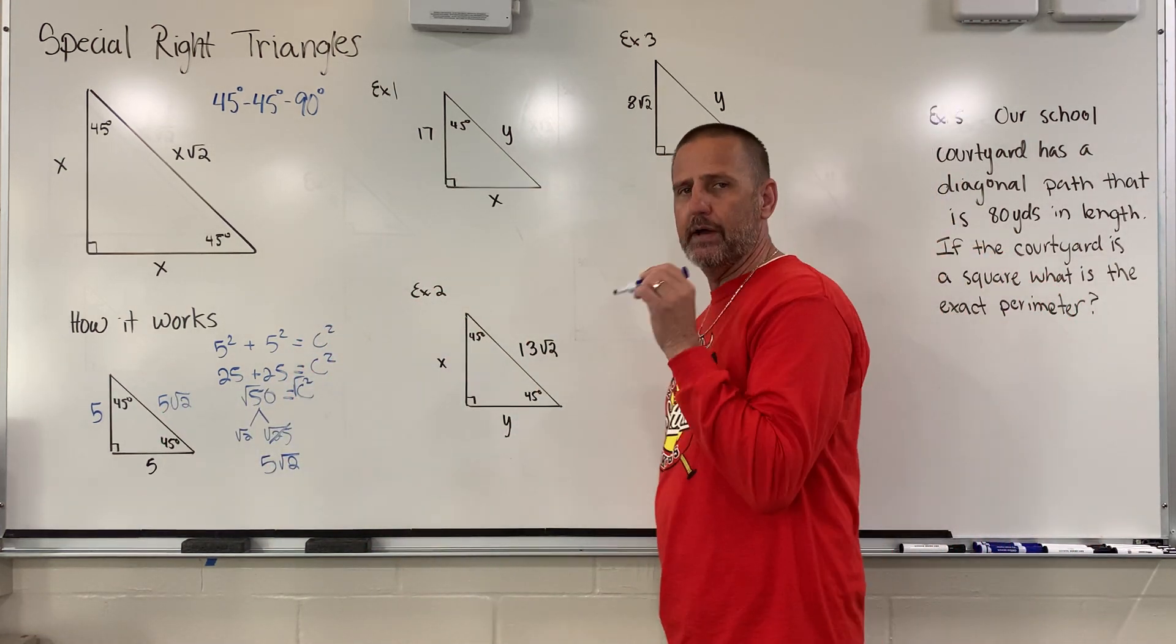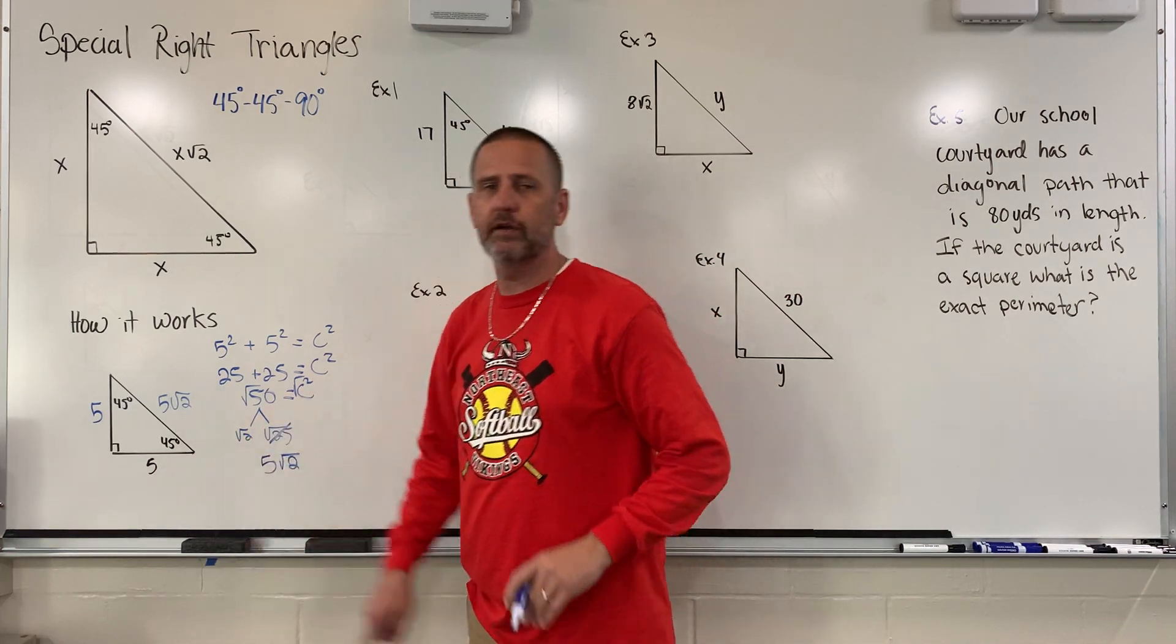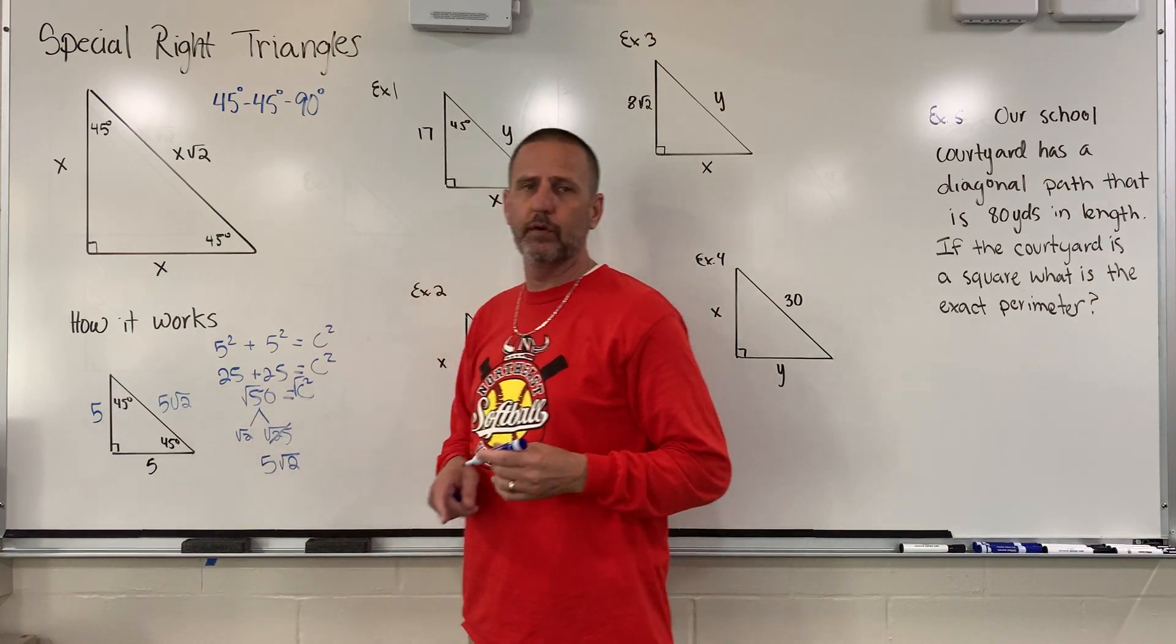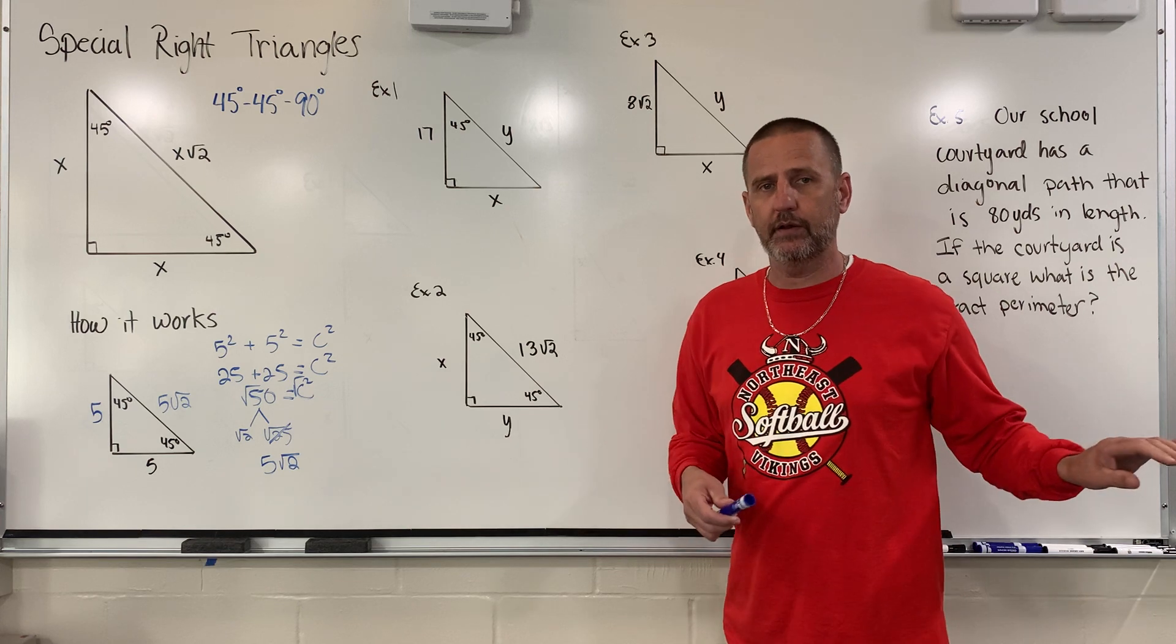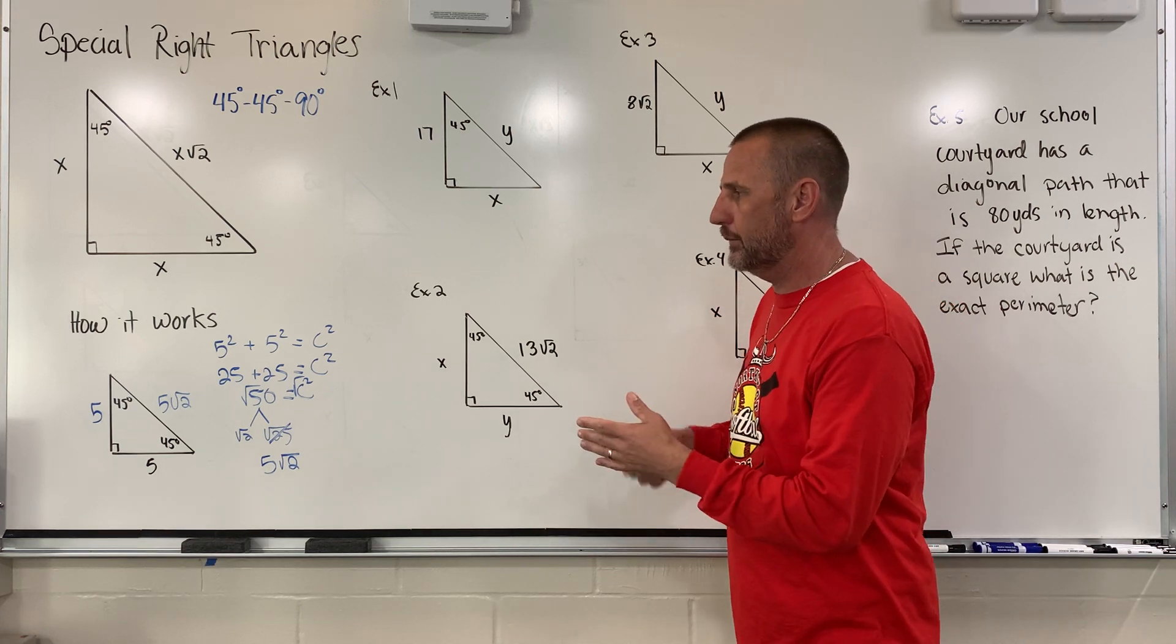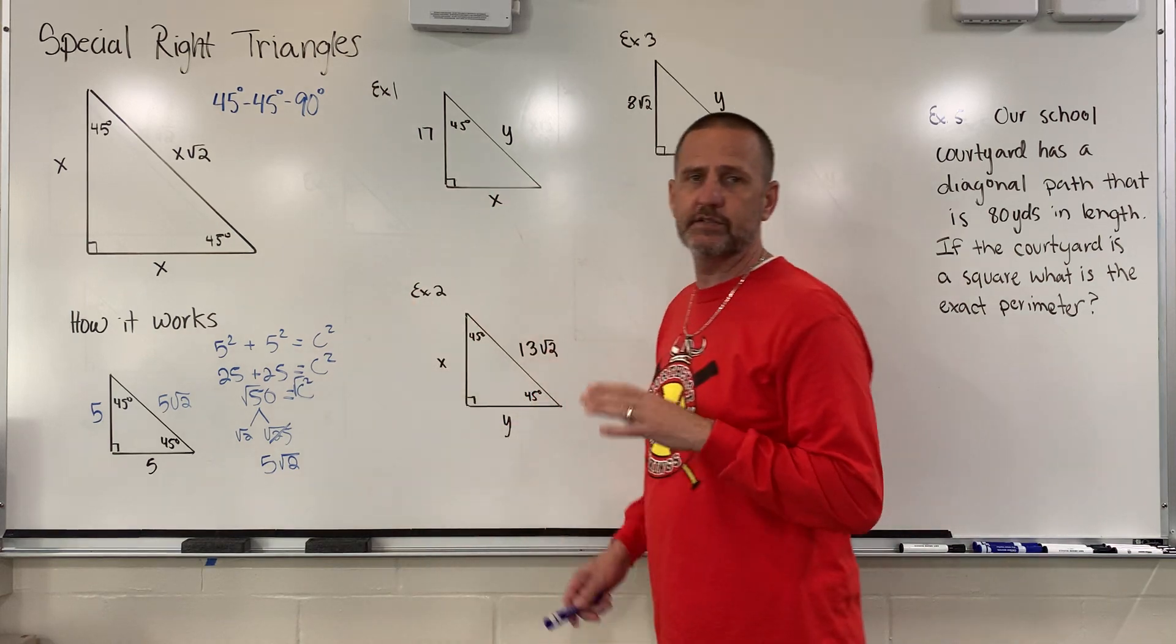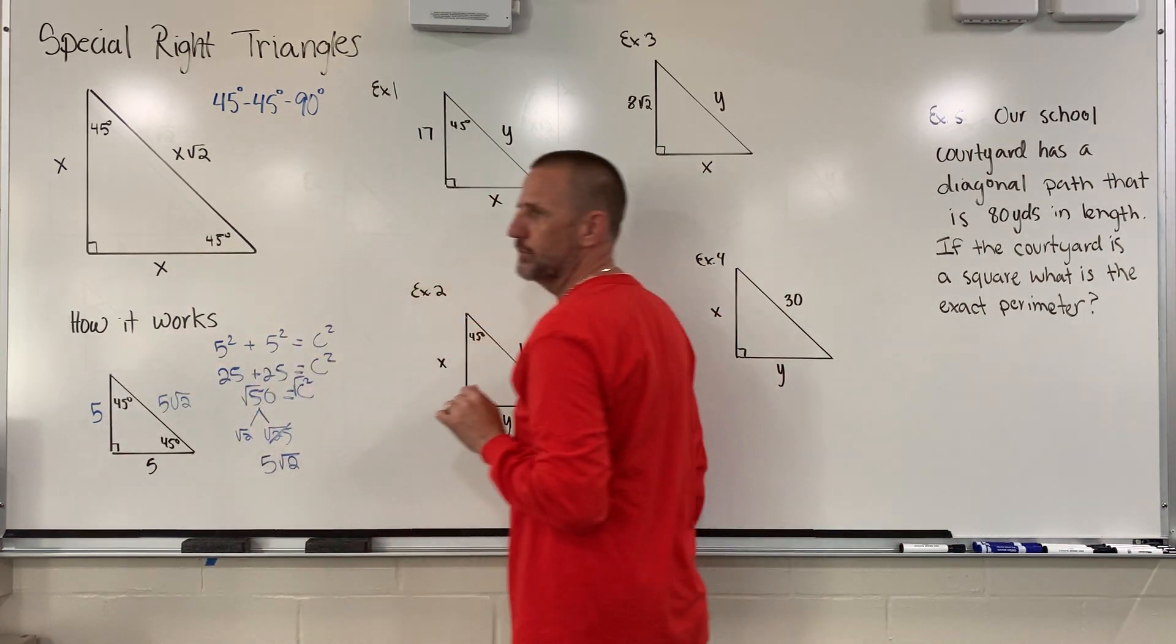This would happen no matter what number I ever choose - any number I choose and plug in that spot, I will always end up with these two matching, and the third one, the hypotenuse, being the same as the other two times a radical 2. So it's really arbitrary as to what I put here. It could be 5, 6, 7, it could be 400. It doesn't really matter. It's always going to be these two are the same, and the last one, the square root of 2.